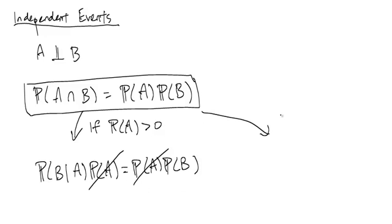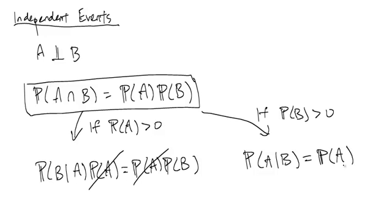Of course the same is true if the probability of B is greater than zero. We have a similar thing where we can conclude that the probability of A given B is the same as the probability of A. The idea is that knowing B doesn't tell us anything new about event A.